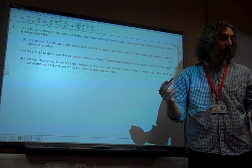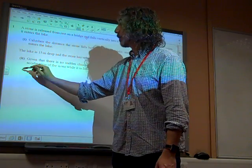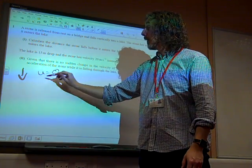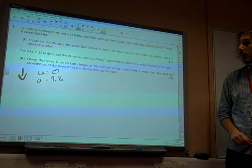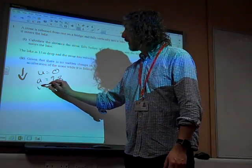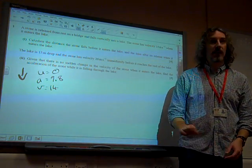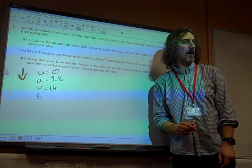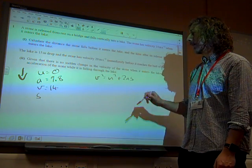Okay, the stone is falling. It makes sense for us to take downwards as being our positive direction because it's fallen downwards. It's released from rest. The acceleration would be 9.8 metres per second per second because it's fallen due to gravity. What else is going on? It has a velocity of 14 at the point when it enters the lake. And we need to find the distance that it falls. So we've got u and a and v and s. That looks like a v squared is u squared plus 2as kind of equation.